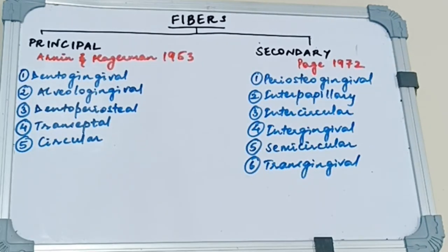Now according to Page and Schroeder we have two types of gingival fibers: the principal fibers and the secondary fibers. In the principal fibers we have the dentogingival, alveologingival, dentoperiosteal, transseptal, and circular. Whereas in the secondary we have periosteogingival, interpapillary, intercircular, intergingival, semicircular and transgingival.